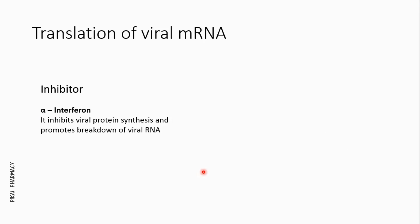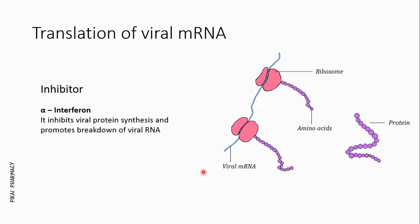After replication, the virus produces viral proteins through translation, and we can also inhibit this step to prevent viral infection. The viral mRNA gets translated to form viral proteins required to build the protein envelope and capsid. An example of an inhibitor of this translation step is alpha interferon, a glycoprotein obtained from human leukocytes. It inhibits viral protein synthesis and promotes the breakdown of viral RNA. Alpha interferon is used for the treatment of hepatitis B and hepatitis C.